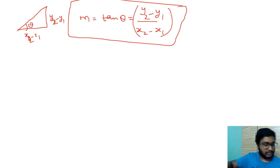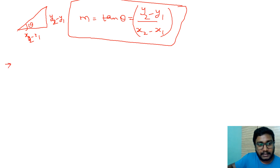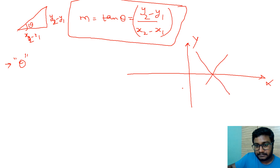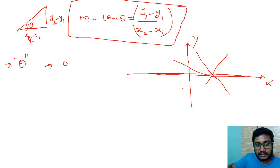Next, what is the range of θ? Given the x and y axes, a straight line can point in any direction. However, we can be assured that θ stays between 0 degrees and 180 degrees only. The question is: what happens if it crosses 180 degrees?